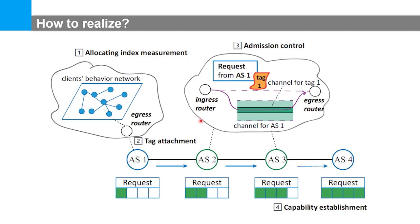We now look at the overview of FEBA. It can be processed in four parts. First, source ASes enforce the allocating index measurement by considering two attributing factors. Second, source ASes attach a suitable tag for each capability request. Third, transit ASes leverage a hierarchical queue to execute admission control for capability requests. Finally, the capability can be established hop by hop.